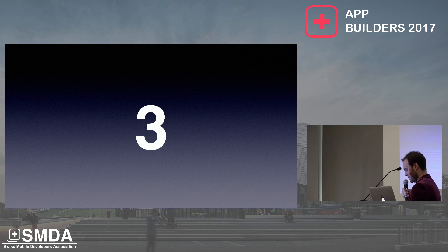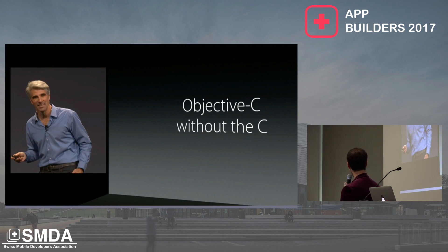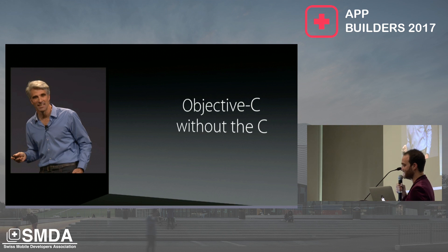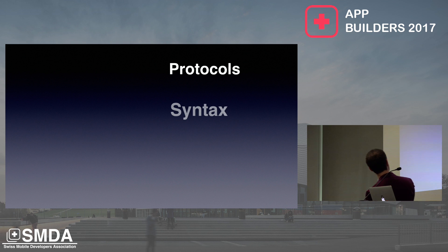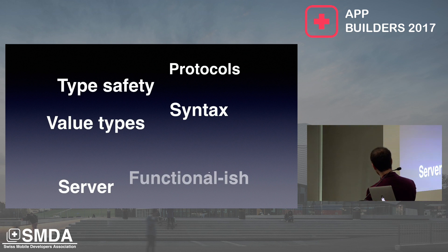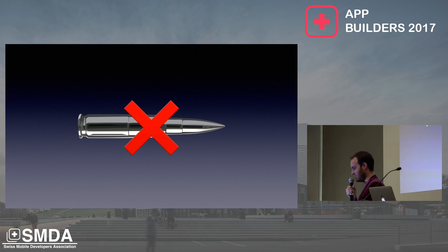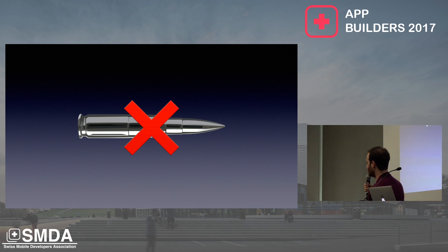The last thing I want to talk about, which is kind of controversial, is Swift itself. Swift was sold with the buzzword of being Objective-C without the C — which sounds quite nice. I love Swift; there's a lot to love about it — type safety, functional-ish features, server-side Swift. But Swift is not a silver bullet. Even though it's 2017 and Swift 4 is around the corner, I don't think Swift makes sense for every app today.